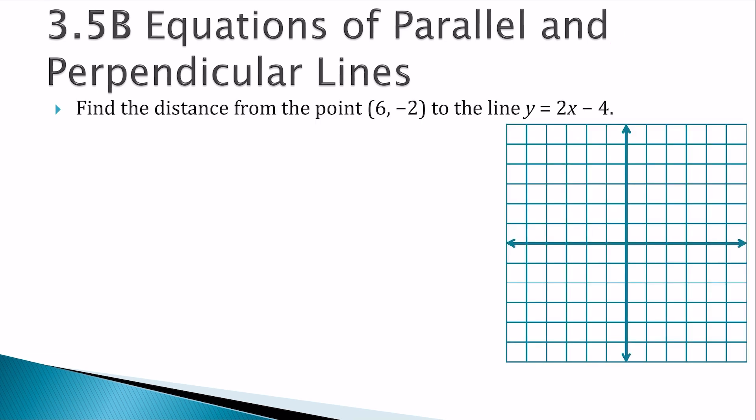So let's find the distance from the point 6, negative 2 to the line y equals 2x minus 4. Maybe I could start by graphing 6, negative 2. It's right there. Maybe I'll call that point P. And then I need the line 2x minus 4. So the y-intercept is negative 4 and the slope is 2 or 2 over 1. So I go up 2 over 1. Up 2 over 1. And I get this line right there. Alright. So I have my point and my line.